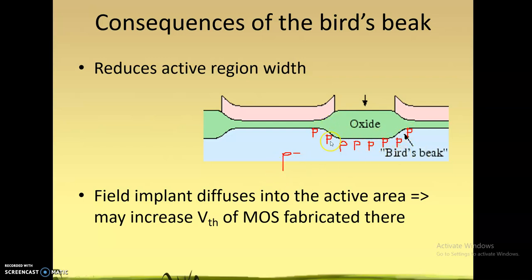In the first step we already doped the isolation region with boron. Because of the bird's beak, this implant will also encroach into the active region. We do not want to increase the threshold voltage of the MOSFET fabricated in the active region — that is not what we want. So if the implants encroach into the active region, the threshold voltage of the active MOSFET will increase, and that is not desirable.